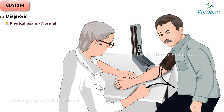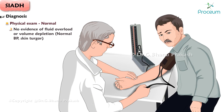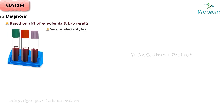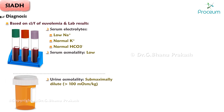Diagnosis. Physical exam is most often normal, with no evidence of fluid overload or volume depletion — normal blood pressure, skin turgor, etc. Diagnosis is made using both the clinical appearance of euvolemia and laboratory results. When SIADH is suspected, the following lab tests should be ordered: serum electrolytes showing low sodium with normal potassium and bicarbonate, low serum osmolality.